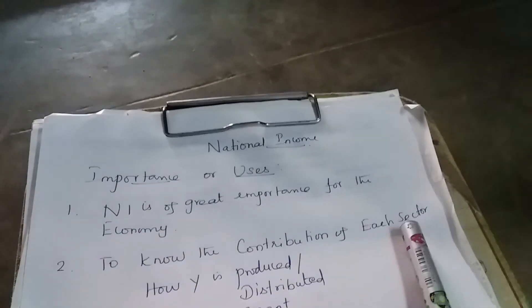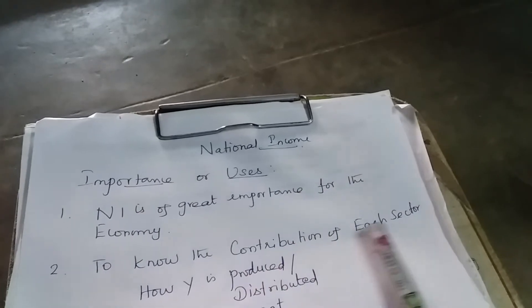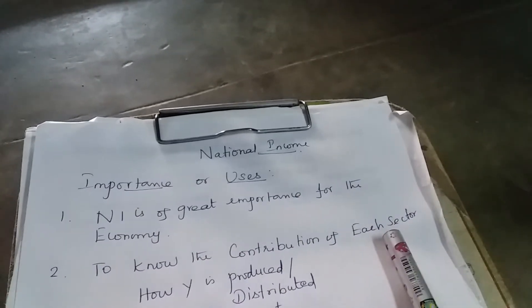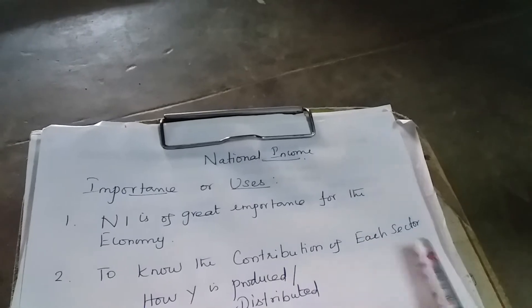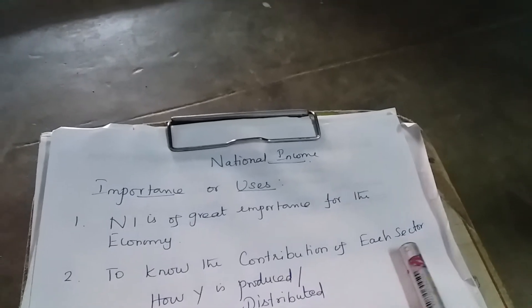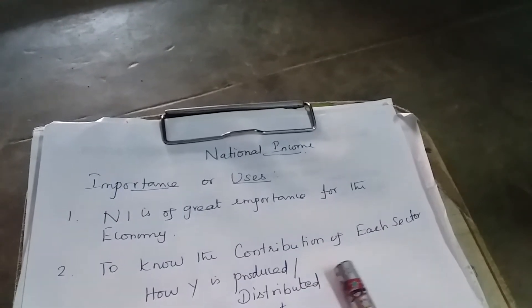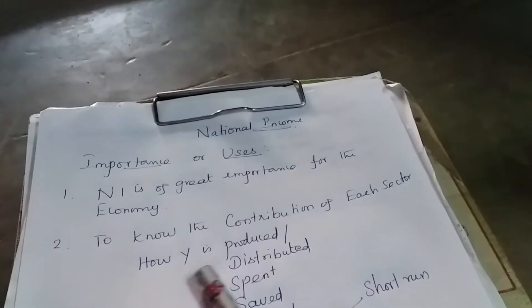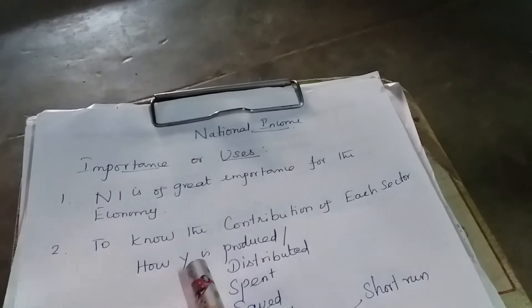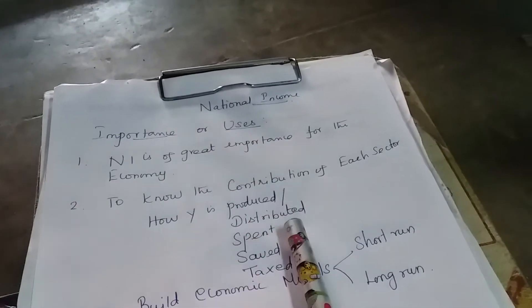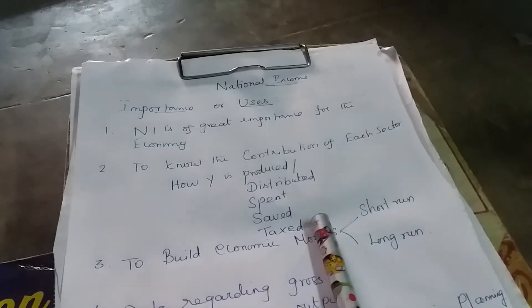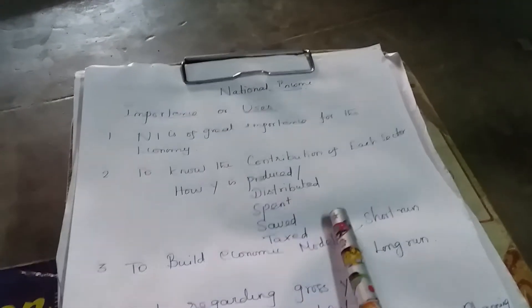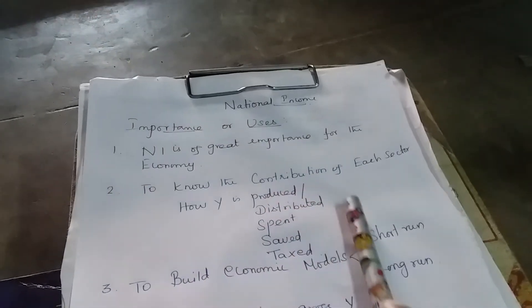To know the contribution of each sector — if we come to know each sector like the primary sector, agriculture and allied, secondary sector, industrial sector, tertiary sector, and service sector — then only we come to know how income is produced, how income is distributed, how income is spent, saved, and taxed. So then only we can take further plans. It is very important.